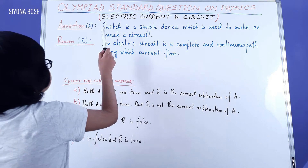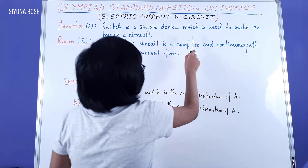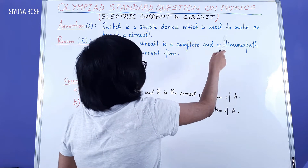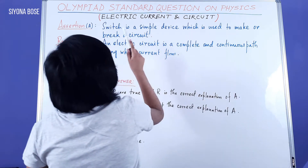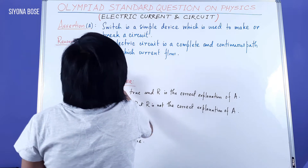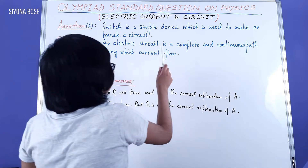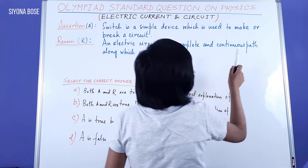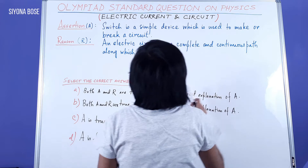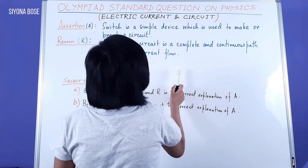Assertion: A switch is a simple device which is used to make or break a circuit. Reason: An electric circuit is a complete and continuous path along which current flows.